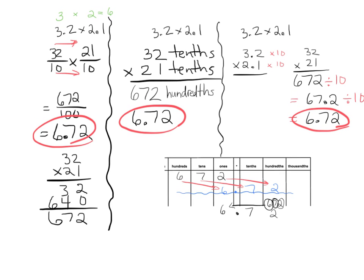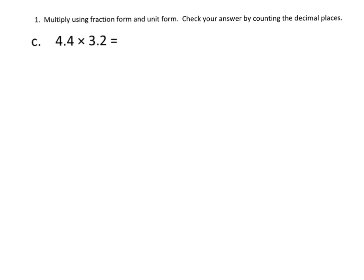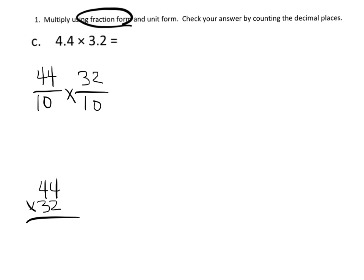So let's move on. This says to solve the problem twice. Once as a fraction and once as that unit form. We're not going to use the third method that I shared already. So let's get started. First, we're going to do it as fractions. So in fraction form, we've got 44 tenths times 32 tenths.